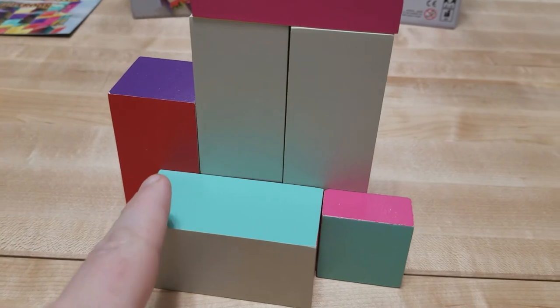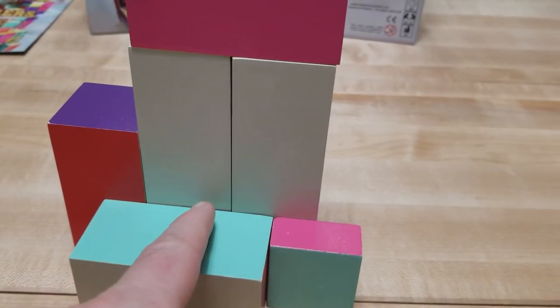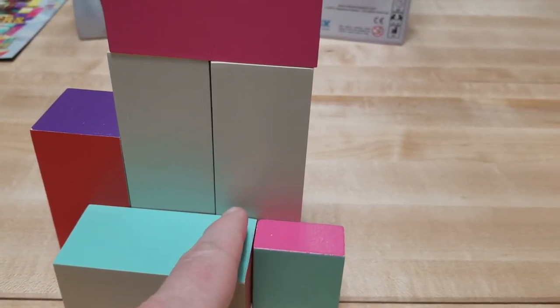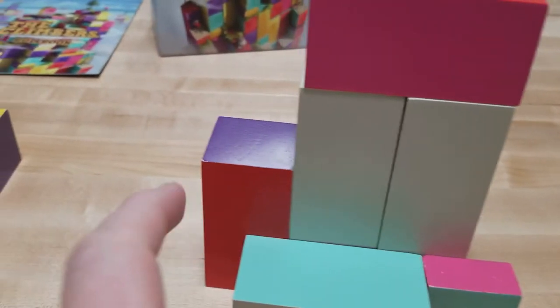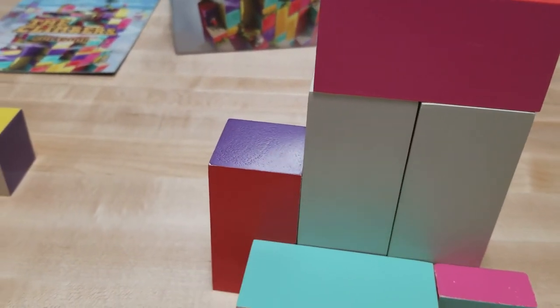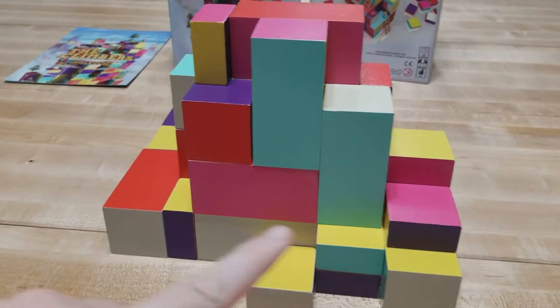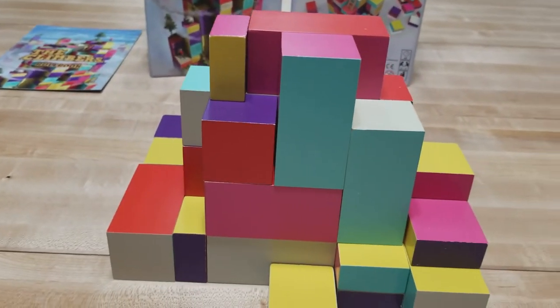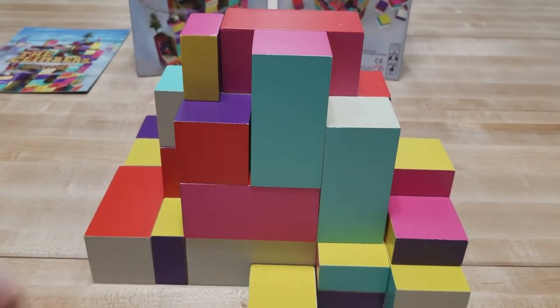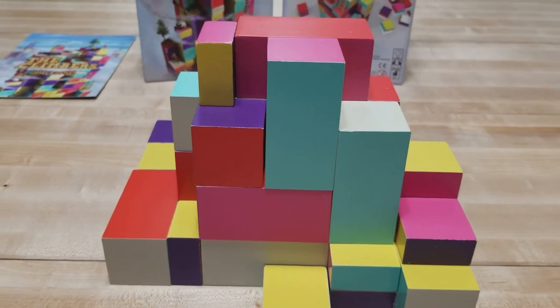So here are some other legal placements. One is here, two is touching there, one is here. This one is evenly split, this one's completely touching on one side. So you'll continue legally placing all the pieces until the two long center white pieces are completely covered.